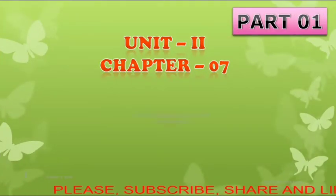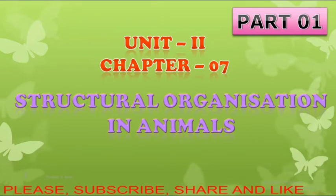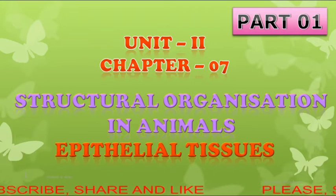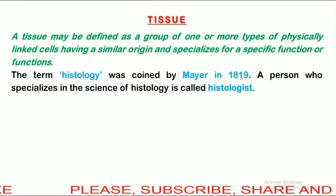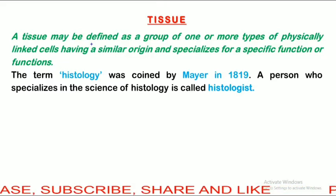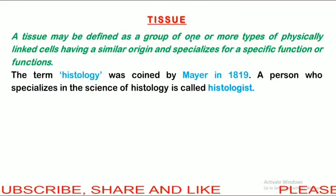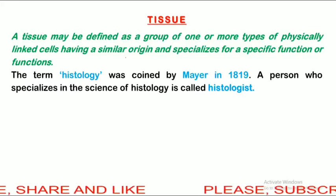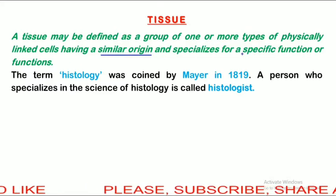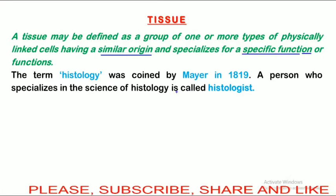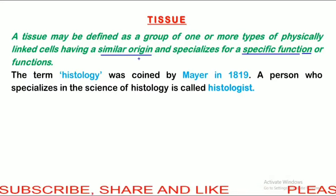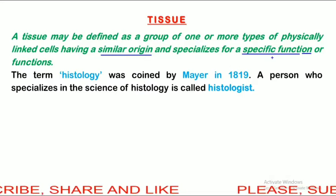Hello, it's time. Today I am going to discuss part one of structural organization in animals. In this part, we will discuss about the epithelial tissues. A tissue may be defined as a group of one or more types of physically linked cells having a similar origin and specialized for a specific function or functions. So tissue is a group of cells having similar origin, similar structure and similar function.